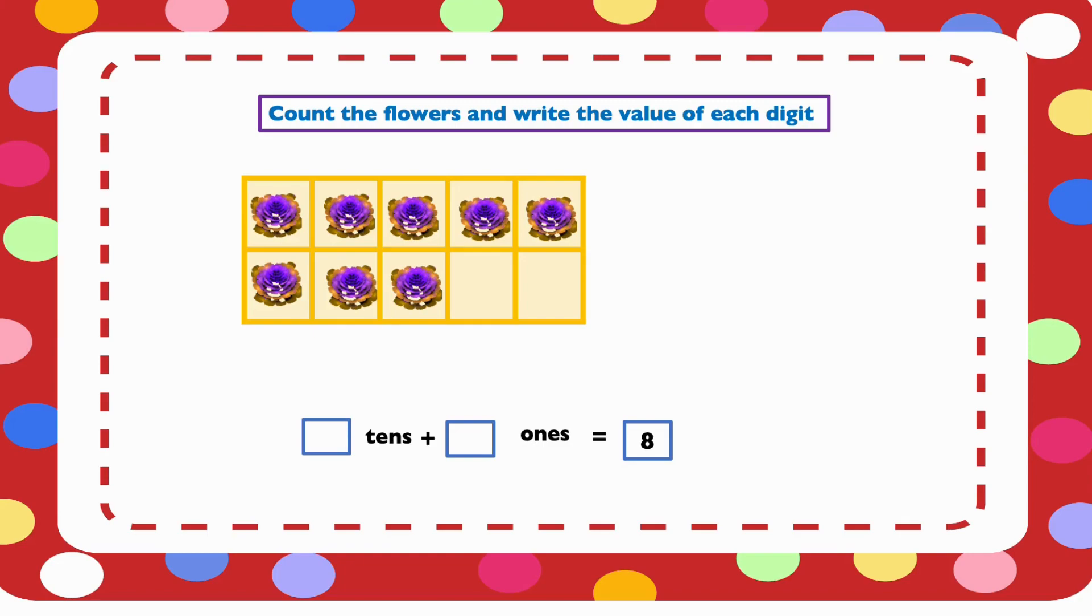We can see that in a group of 10, we have only 8 flowers. So we still have 2 spaces left to make it a group. So 8 is 8 ones. So we have 0 tens.